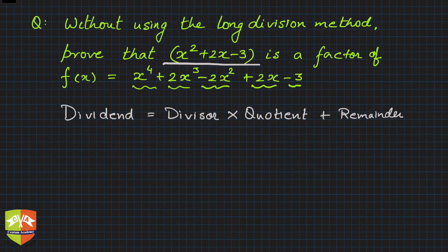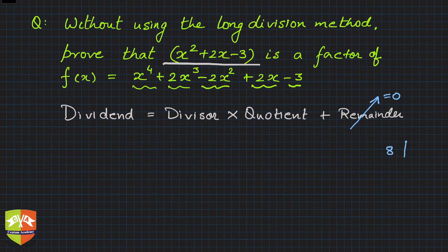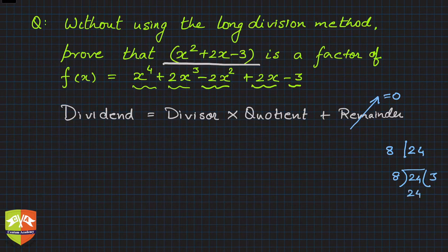If we show that the remainder is 0, then automatically the divisor becomes a factor of the dividend. For example, 8 is a factor of 24 because it leaves no remainder when dividing 24. So in a division process, if the remainder is 0, the divisor is a factor of the dividend — and this holds for polynomials as well.